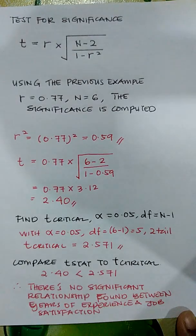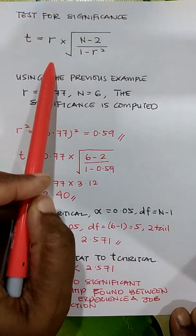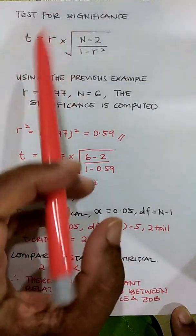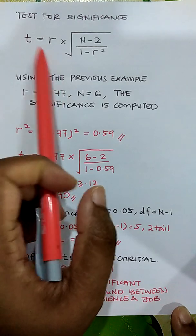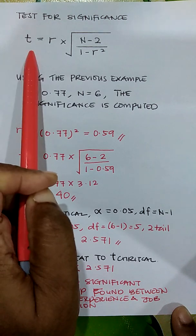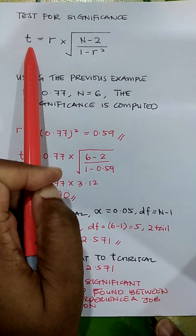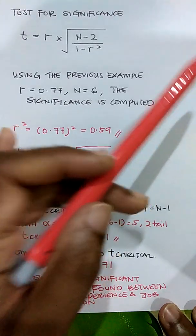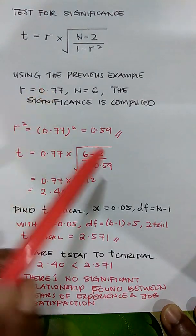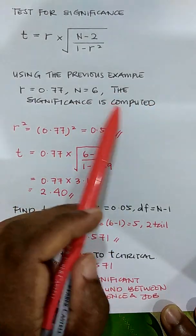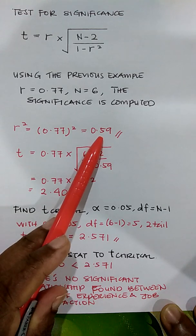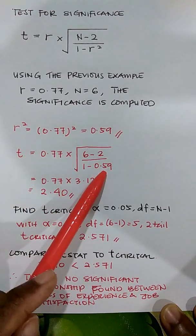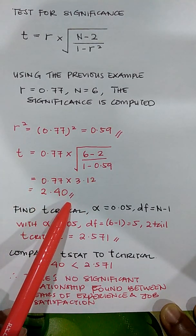Next, we test for significance — we want to know if this r reflects a significant relationship between work experience and job satisfaction. We convert r to a t-statistic using: t = r × √(n−2) / √(1−r²). With r = 0.77 and n = 6: r² = 0.59, and solving gives t = 2.40.